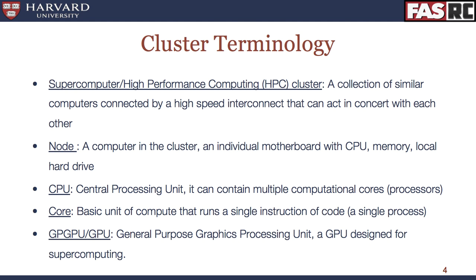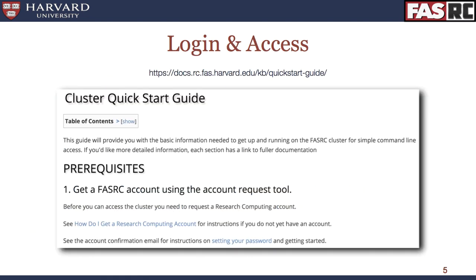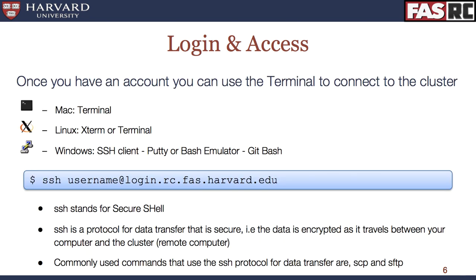In addition to a CPU, some of the nodes on the cluster also have GPUs, or graphical processing units, which are designed for accelerated applications. You can find out more about GPUs on the documentation page. The first thing you'll need to do to work on a cluster is to log in, and to log in, you will need to get an account. We have more information about how to get an account in our quick start guide. Once you have an account, you can log into the cluster and start working.